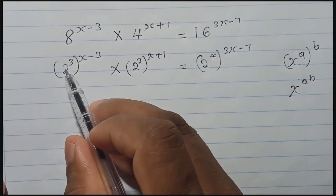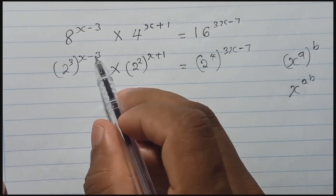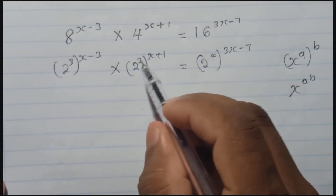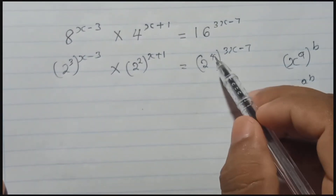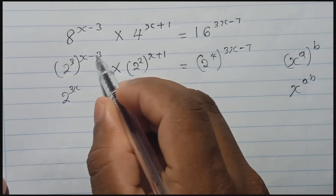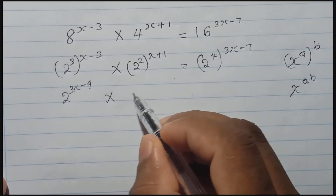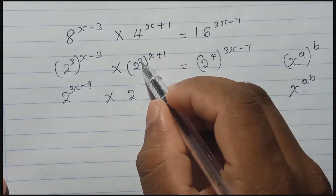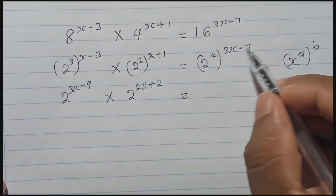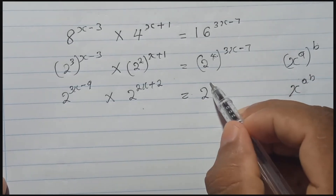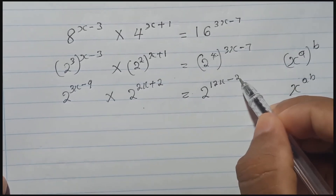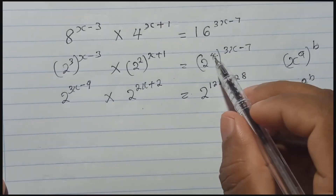Now we apply that rule. For 2 to the power 3 with index x minus 3, we multiply by 3: 3 times x gives 3x, and 3 times minus 3 gives minus 9. For 4, which is 2 squared, multiply by 2: 2 times x gives 2x, and 2 times plus 1 gives plus 2. For 16, which is 2 to the power 4, multiply by 4: 4 times 3x gives 12x, and 4 times minus 7 gives minus 28.